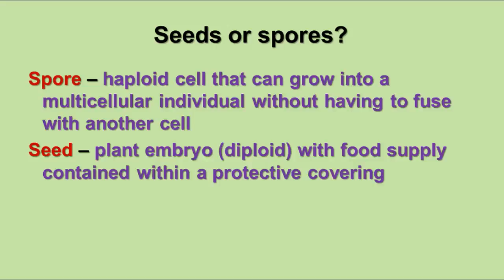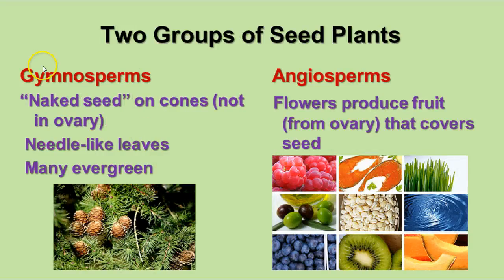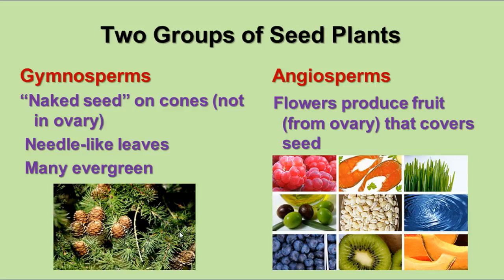The other groups of plants are both seed plants. There are two groups of seed plants: gymnosperms and angiosperms. Gymnosperms means naked seed — they're called naked seeds because they develop on the scales of cones rather than in a protective ovary. They generally have needle-like leaves, although not all of them are needle-like. Many are evergreen, so when you think about pine trees, fir trees, and cedar trees, those are gymnosperms.